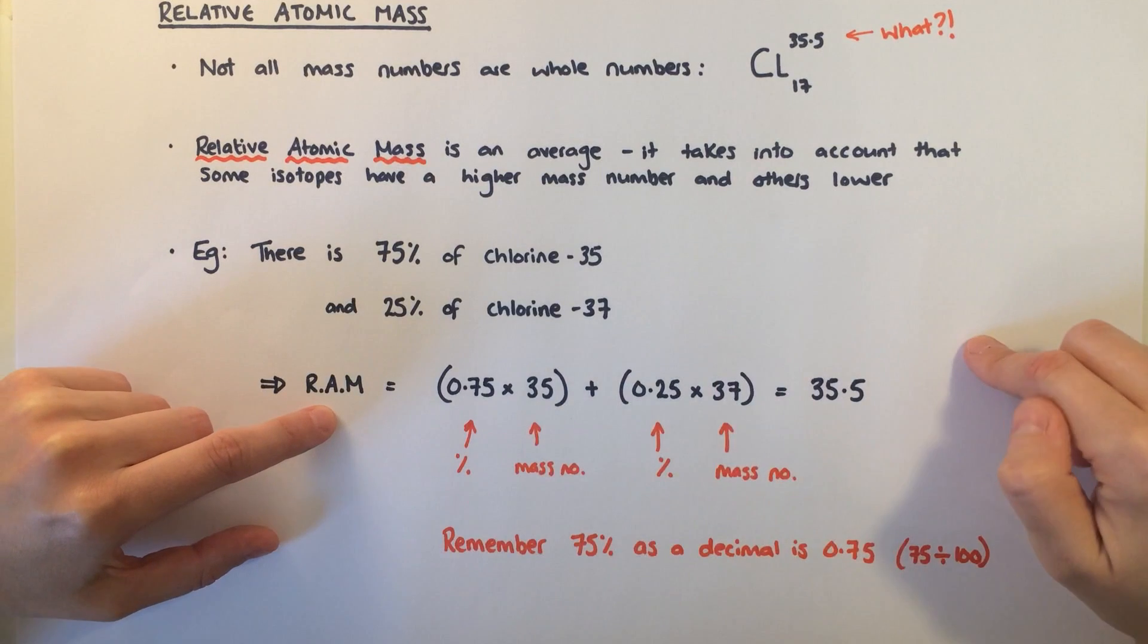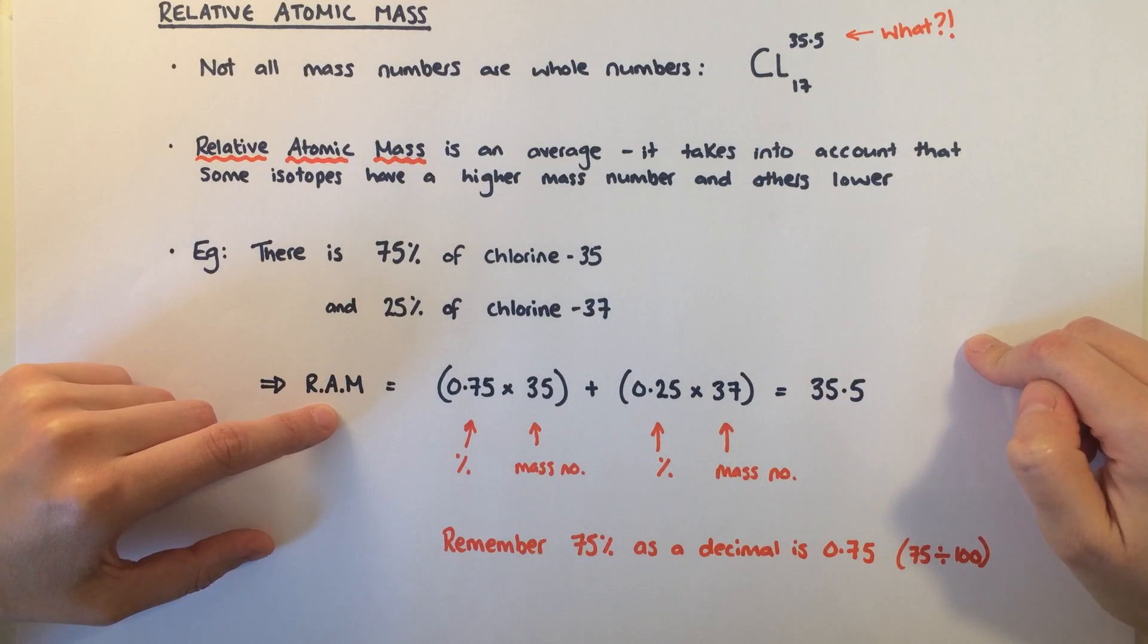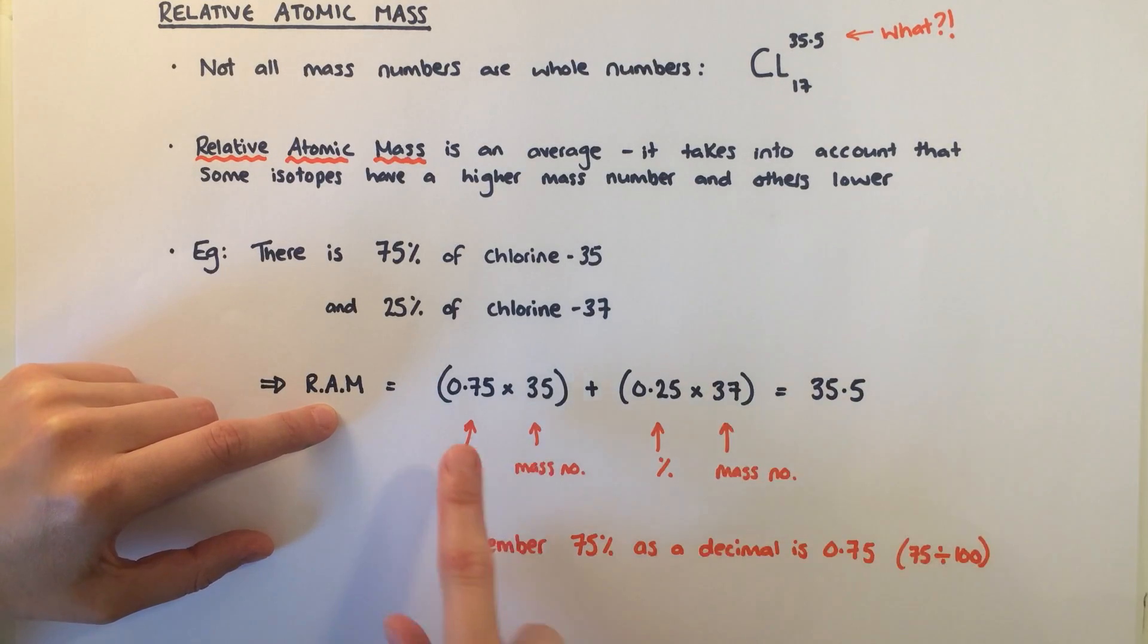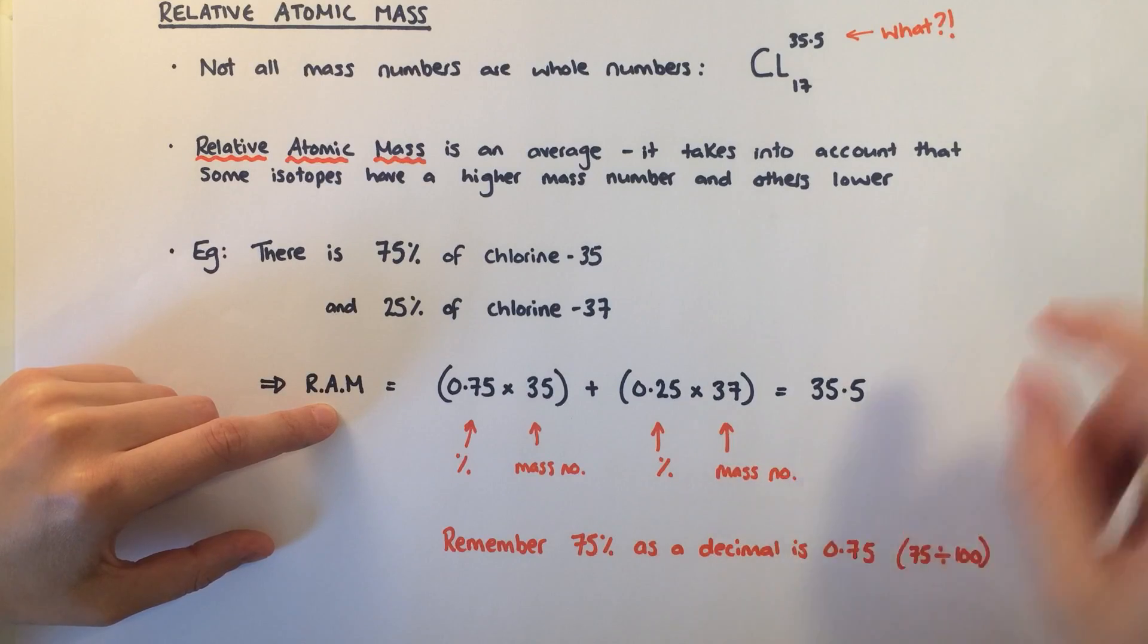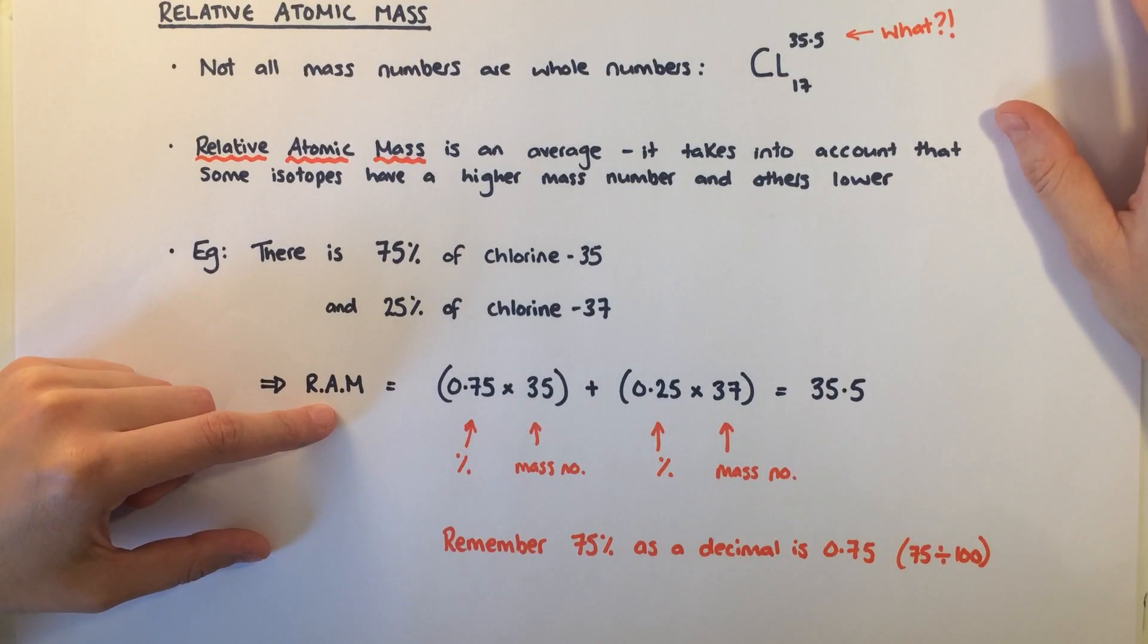To find the relative atomic mass, you need to multiply the percentage by the mass number for one and add it to the percentage multiplied by the mass number for the other. So 75% times 35 plus 25% times 37 gives a relative atomic mass of 35.5.